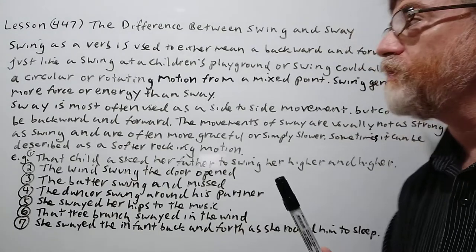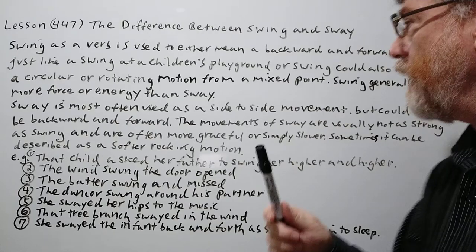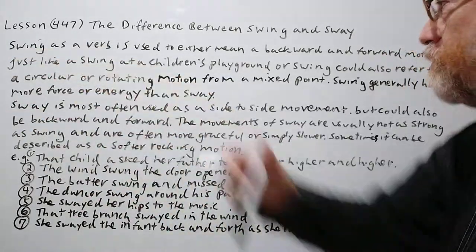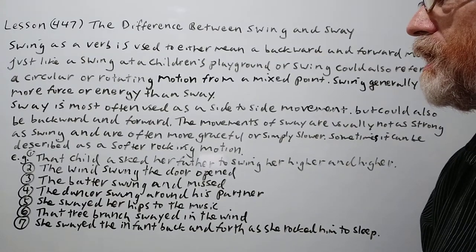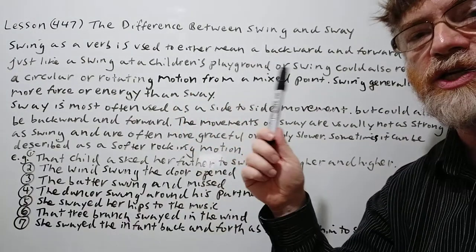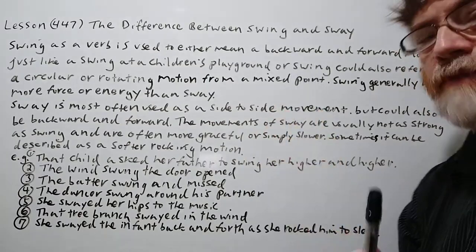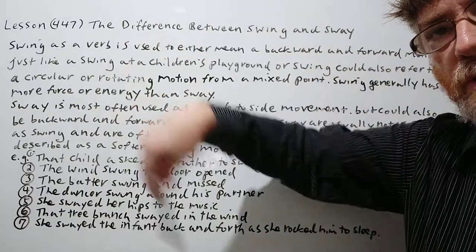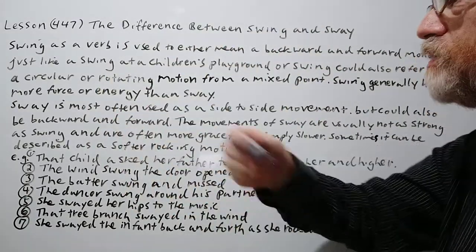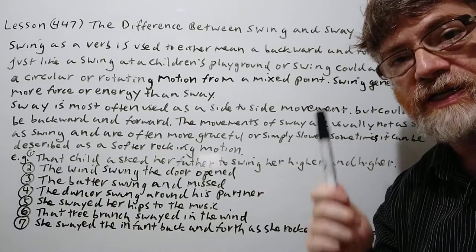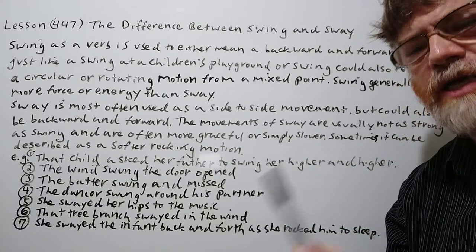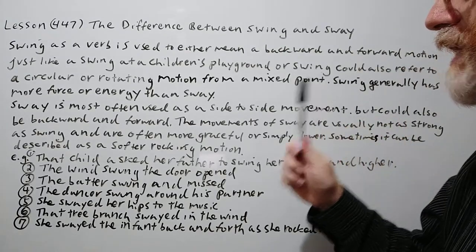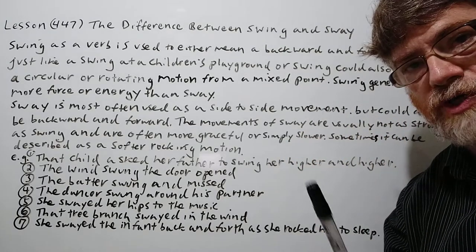Swing as a verb is used to either mean a back and forward motion — just like a swing at a child's playground — or swing could also refer to a circular or rotating motion going around from a fixed point. Swing is usually from a fixed point both ways, and swing generally has more force or energy than sway.